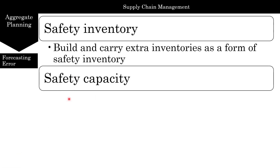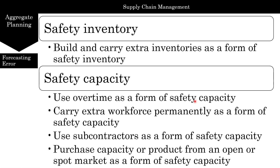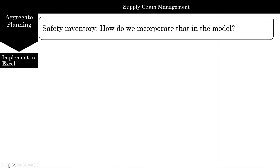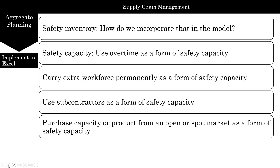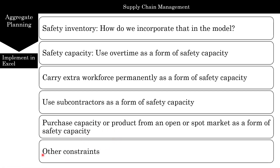We also look at how to build safety capacity: use overtime as a form of safety capacity, carry extra workforce permanently as a form of safety capacity, use subcontractors as a form of safety capacity, and purchase capacity or products from open or spot markets as a form of safety capacity. This is going to be very useful, especially when you do your project, because a lot of companies are not going to trust the forecast. So let's look at how we're going to implement this in Excel — safety inventory, safety capacity, how to carry extra workforce, using subcontracting, and all other constraints.